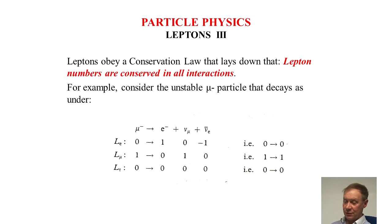Now we'll show the operation of the conservation law that lays down lepton numbers are conserved in all interactions. For example, the unstable mu minus particle decays as under. Mu minus goes to electron plus nu mu and nu electron antiparticle.